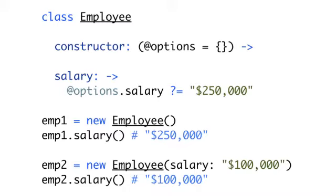So on the screen, we can see what that class definition would look like. And as you can see, we create two employees. The first employee doesn't have any options passed in, so he's going to get a default salary of $250,000. The second employee is going to get a salary of $100,000. And if we call the salary function on that employee, we'd get back $100,000.